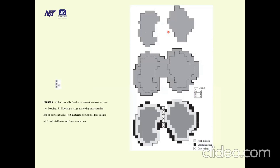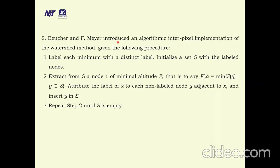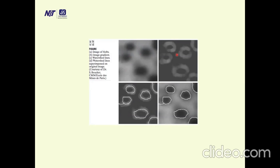This is the final overflow diagram showing how the thin dam line is formed, giving the final watershed segmentation diagram. Now for the algorithm: each minimum is initialized with a distinct level. A set S is initialized with level nodes. A node x of minimum altitude f(x) equal to the mean of y (where y is in S) is extracted. The level of x is attributed to each non-level node y adjacent to x, and y is inserted into set S. The process repeats until S is empty — values are taken from S one by one until the set is null.